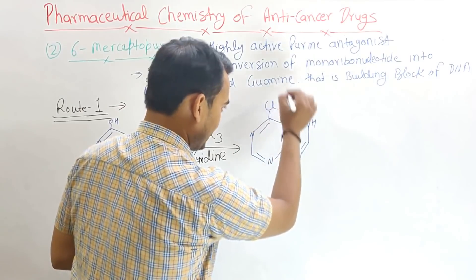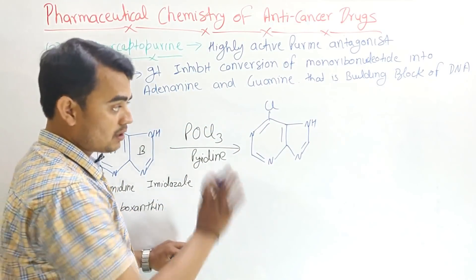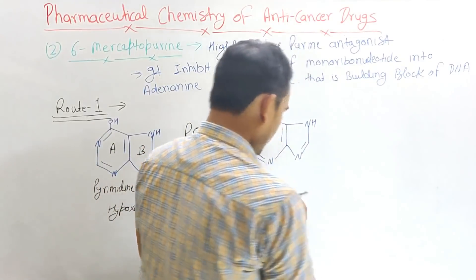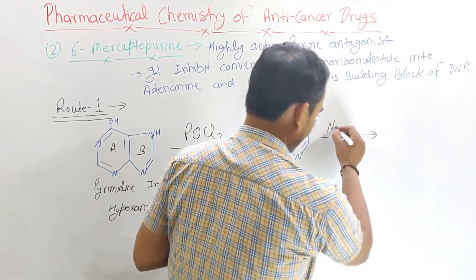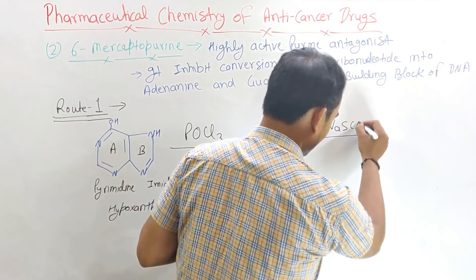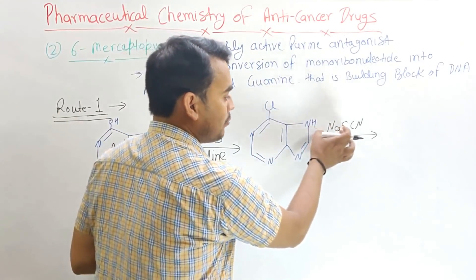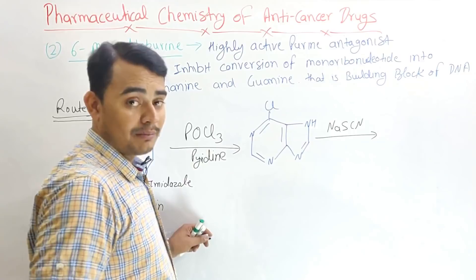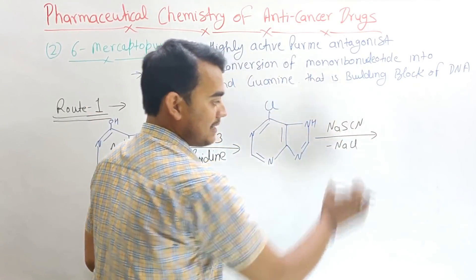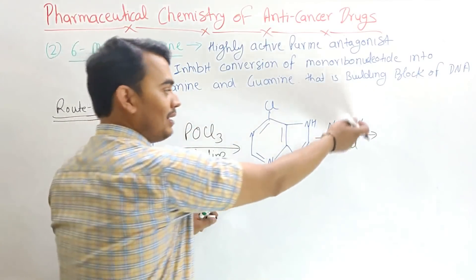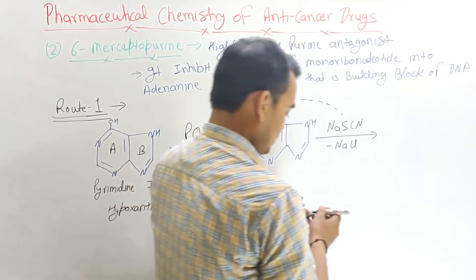The product here is 6-chloropurine. This 6-chloropurine, when again reacted with sodium thiocyanate (NaSCN), the chloride group is removed as NaCl, and the thiocyanate (SCN) group is attached at that position.